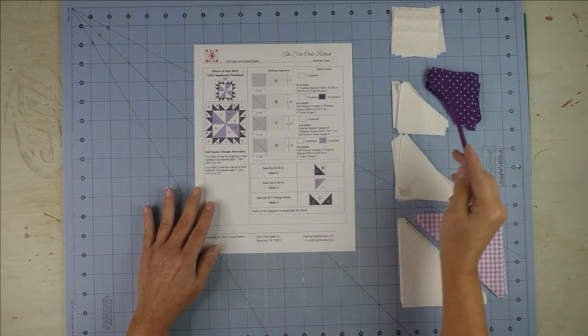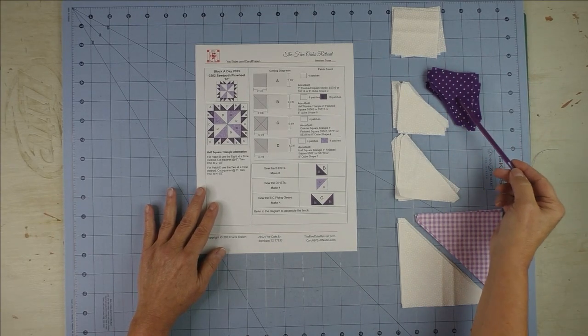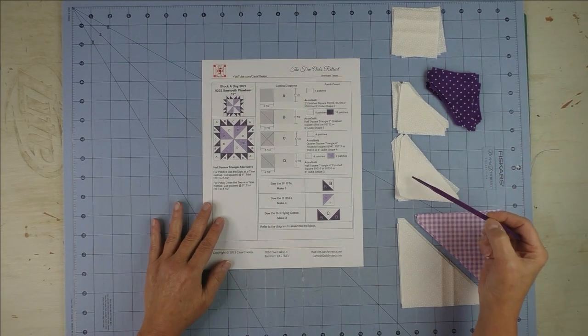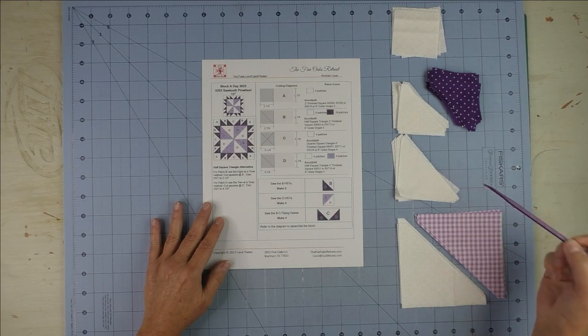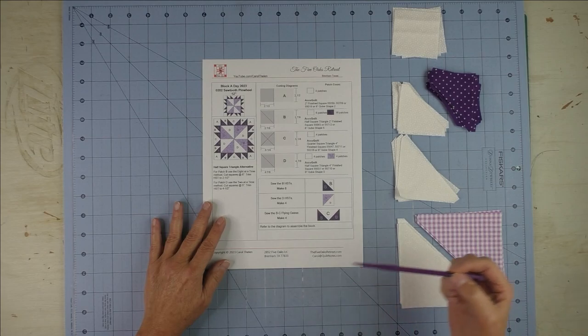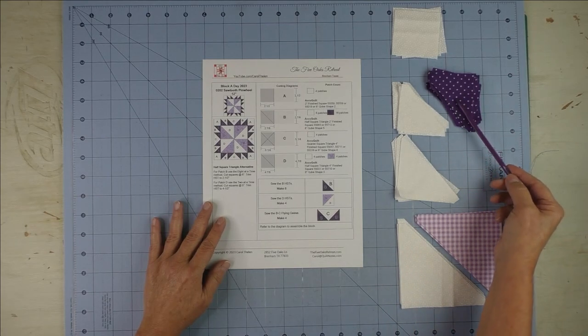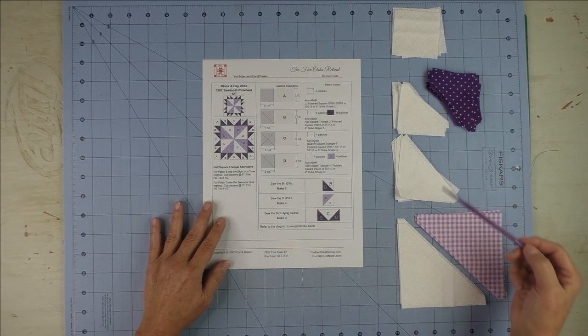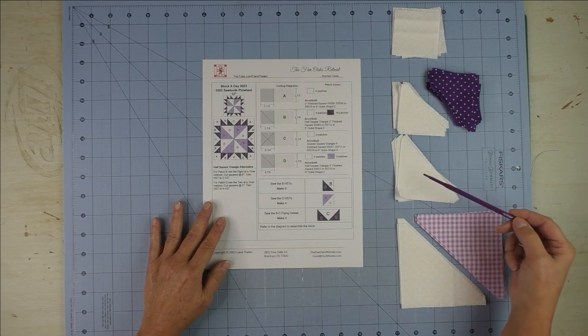Here are the pieces: patch A, the square that goes in the corner, the smaller half square triangles and the center part of the flying geese, and then the larger triangles in the center of the block. We're going to start by making all the half square triangles, small and large, and then piecing the flying geese.